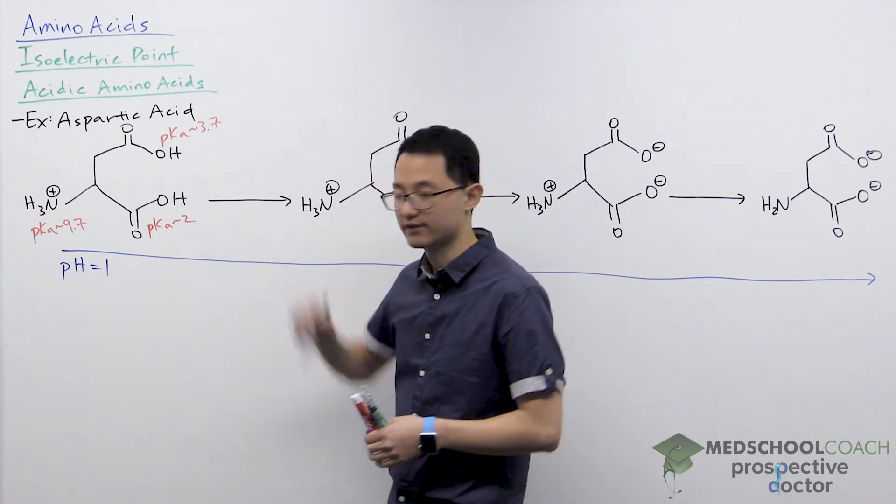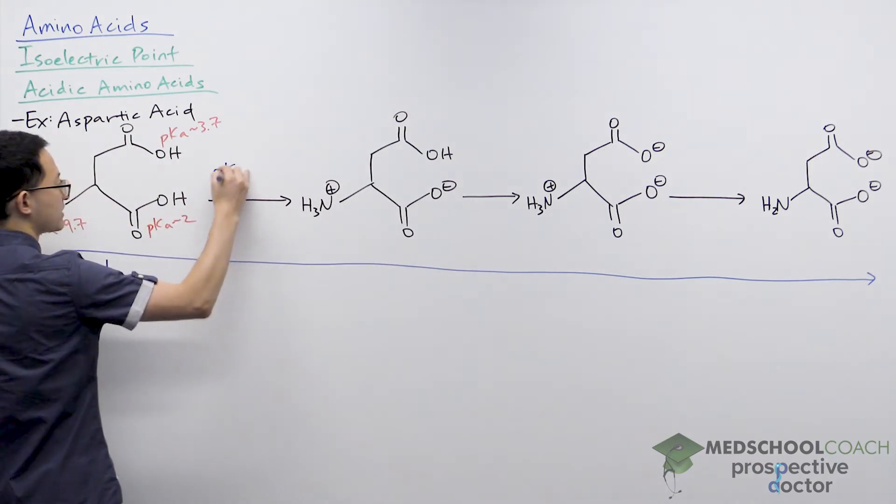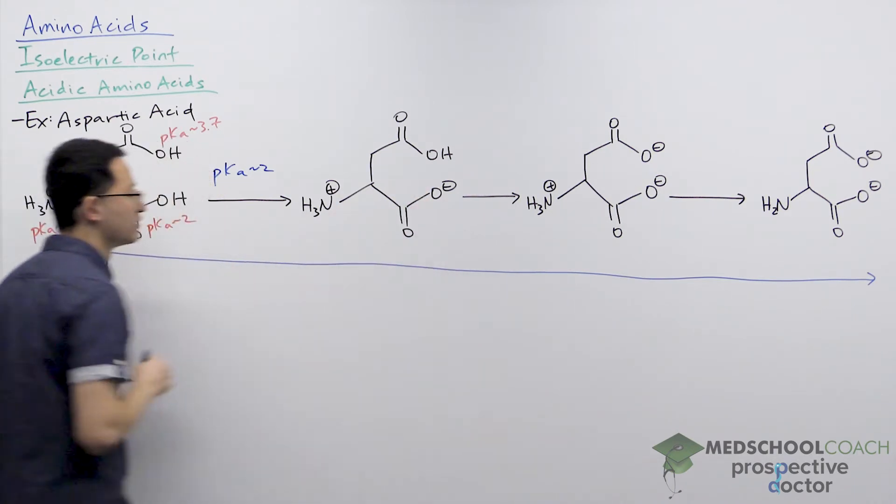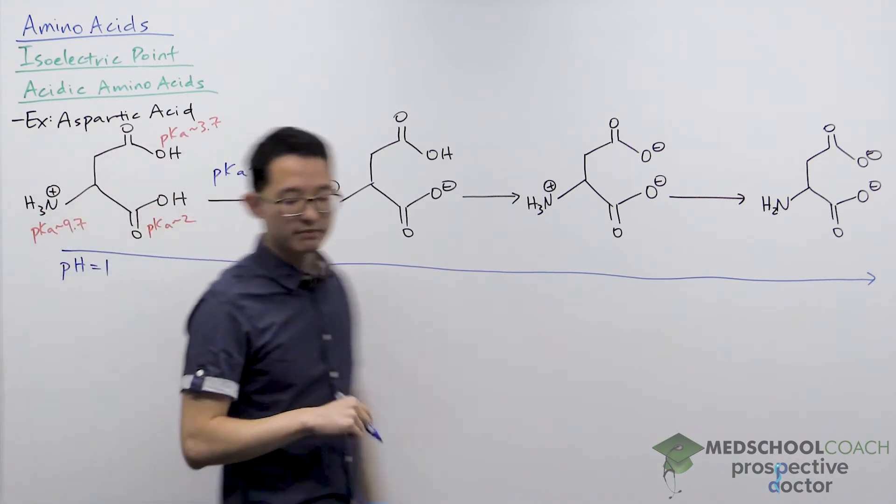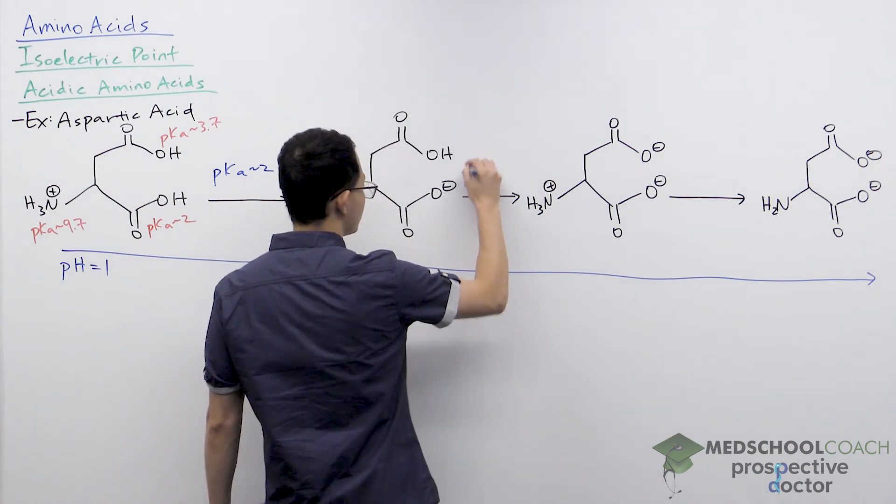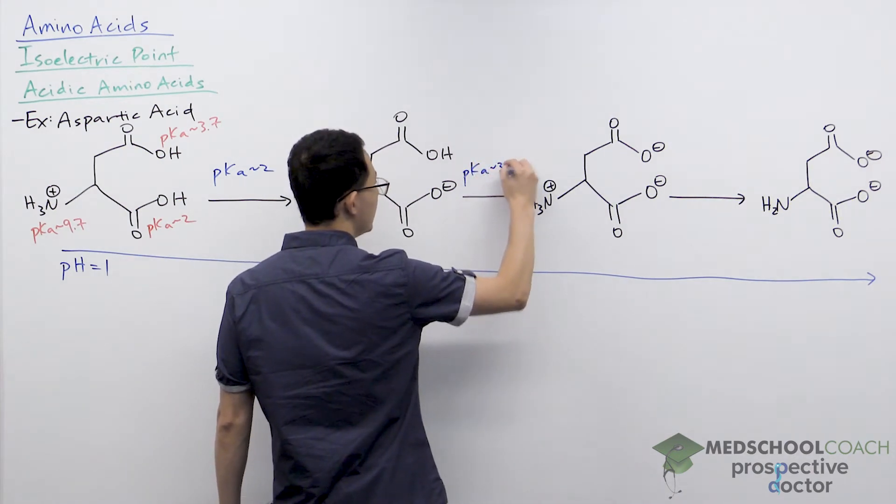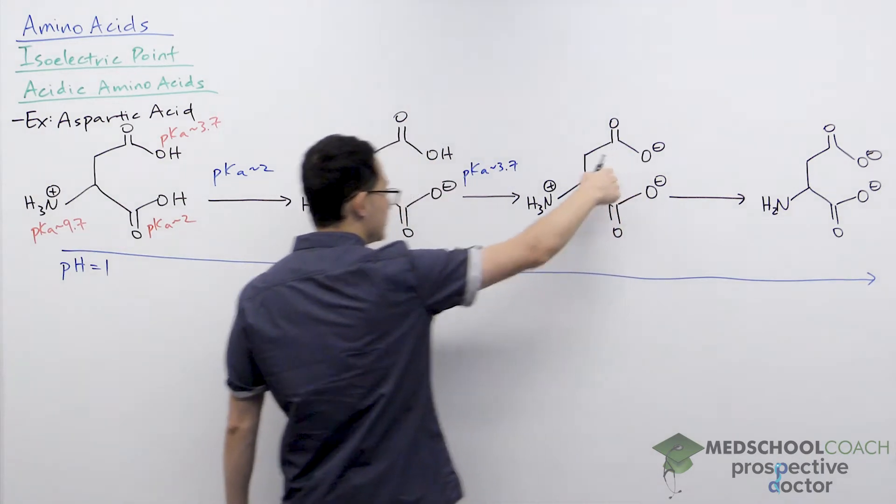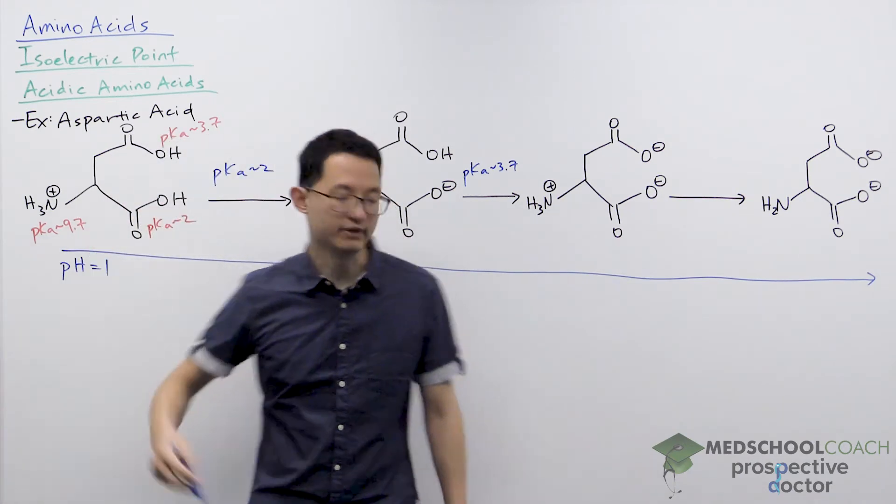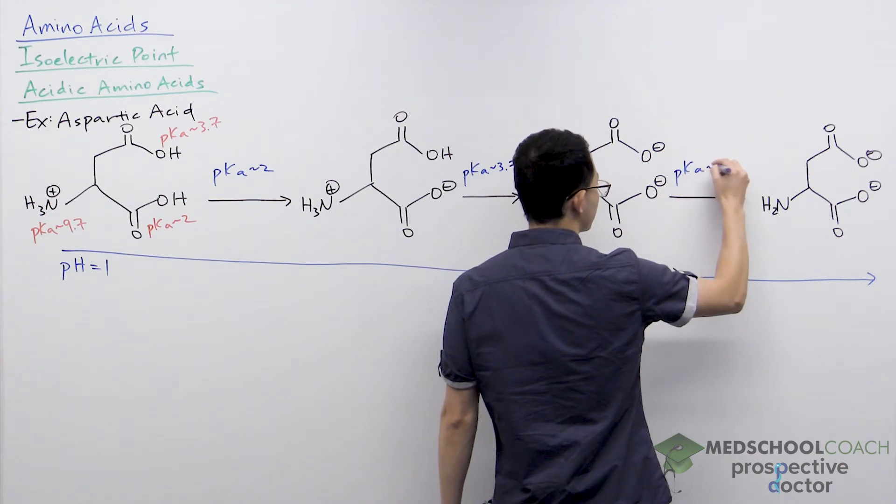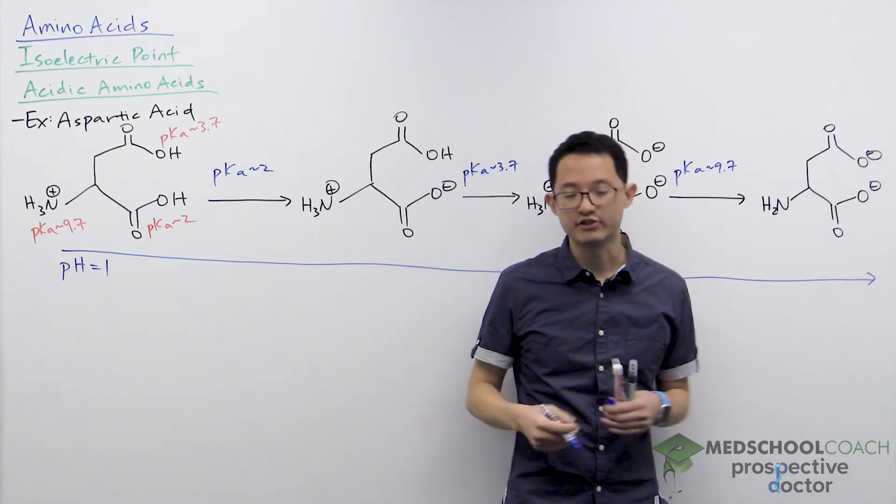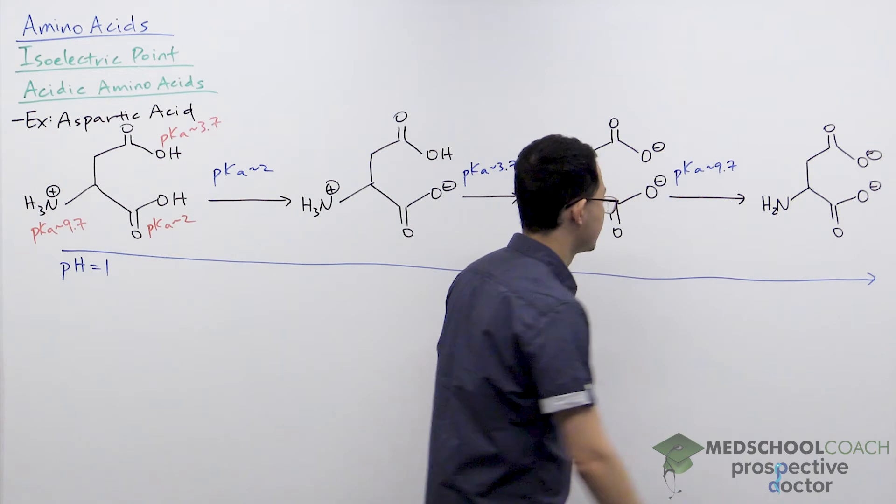So of these three acidic functional groups, the first that's going to be deprotonated is the carboxylic acid. Once we exceed a pKa of 2, it's going to become deprotonated into the carboxylate. The next group that's going to be deprotonated is the side chain. It has a pKa of around 3.7. So once the pH exceeds 3.7, then the side chain will become deprotonated. And finally, you would have to increase the pH until it exceeds 9.7 until you deprotonate the amino group. So at this point, all three of these groups are deprotonated, so you're at a high pH greater than all of these pKa values.